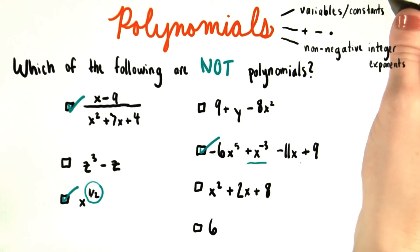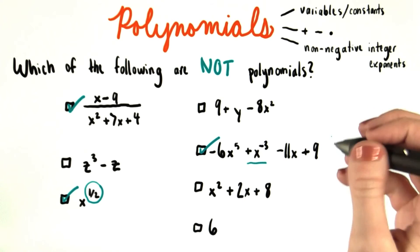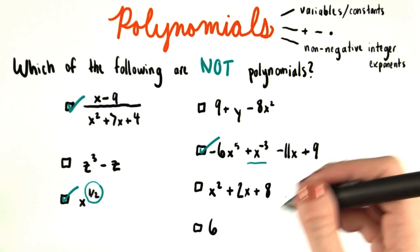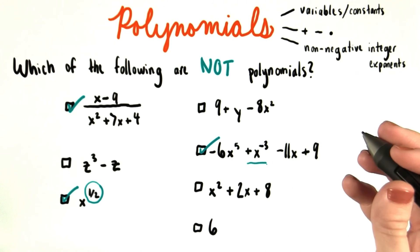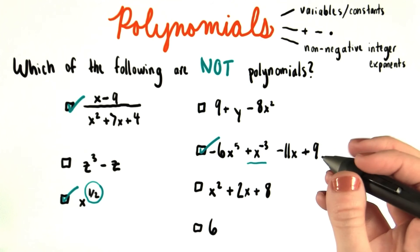but they technically do qualify since they do fit our definition. We said that polynomials could have just variables, just constants, or both. So 6 and all other constant terms are technically polynomials.